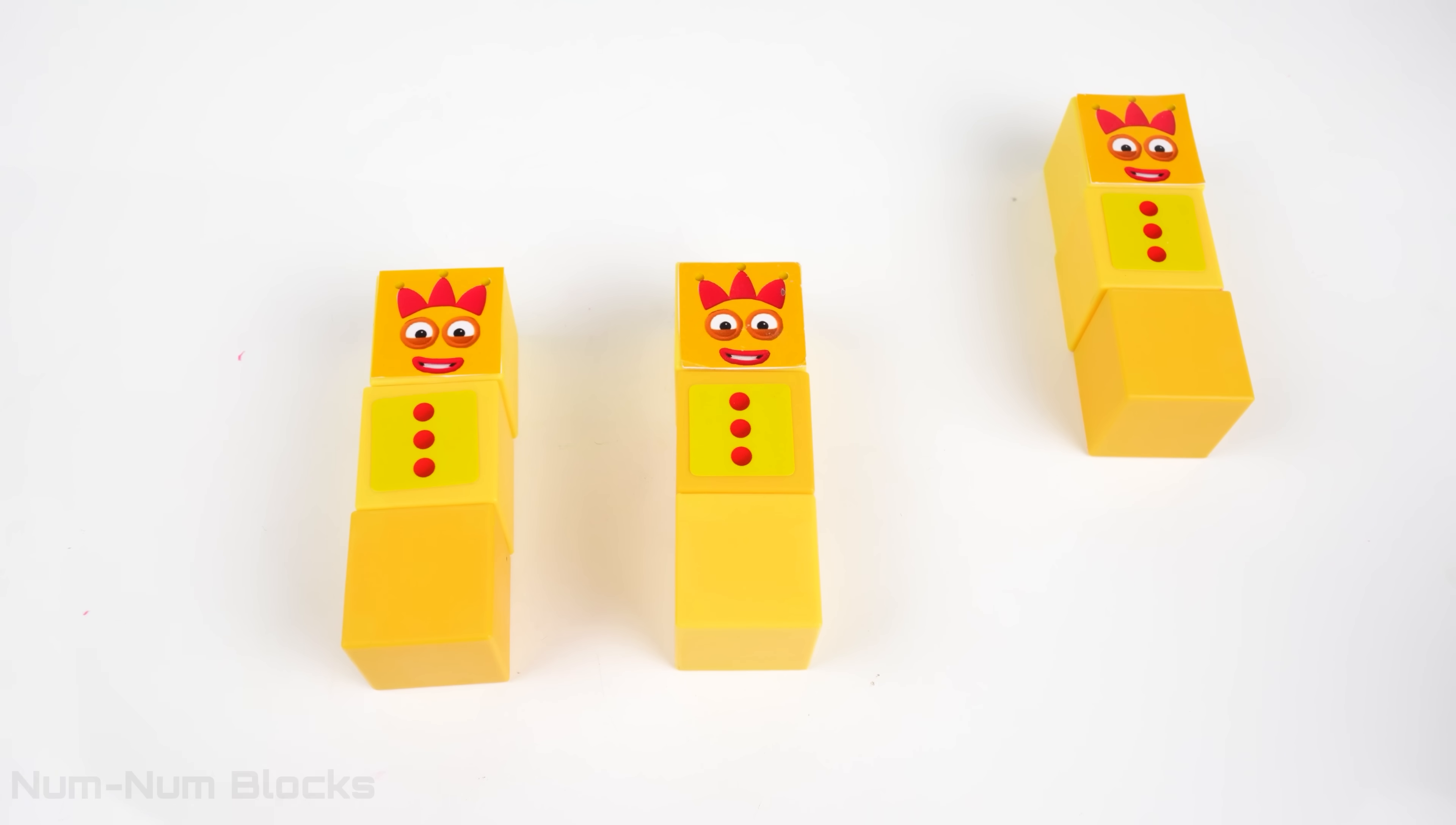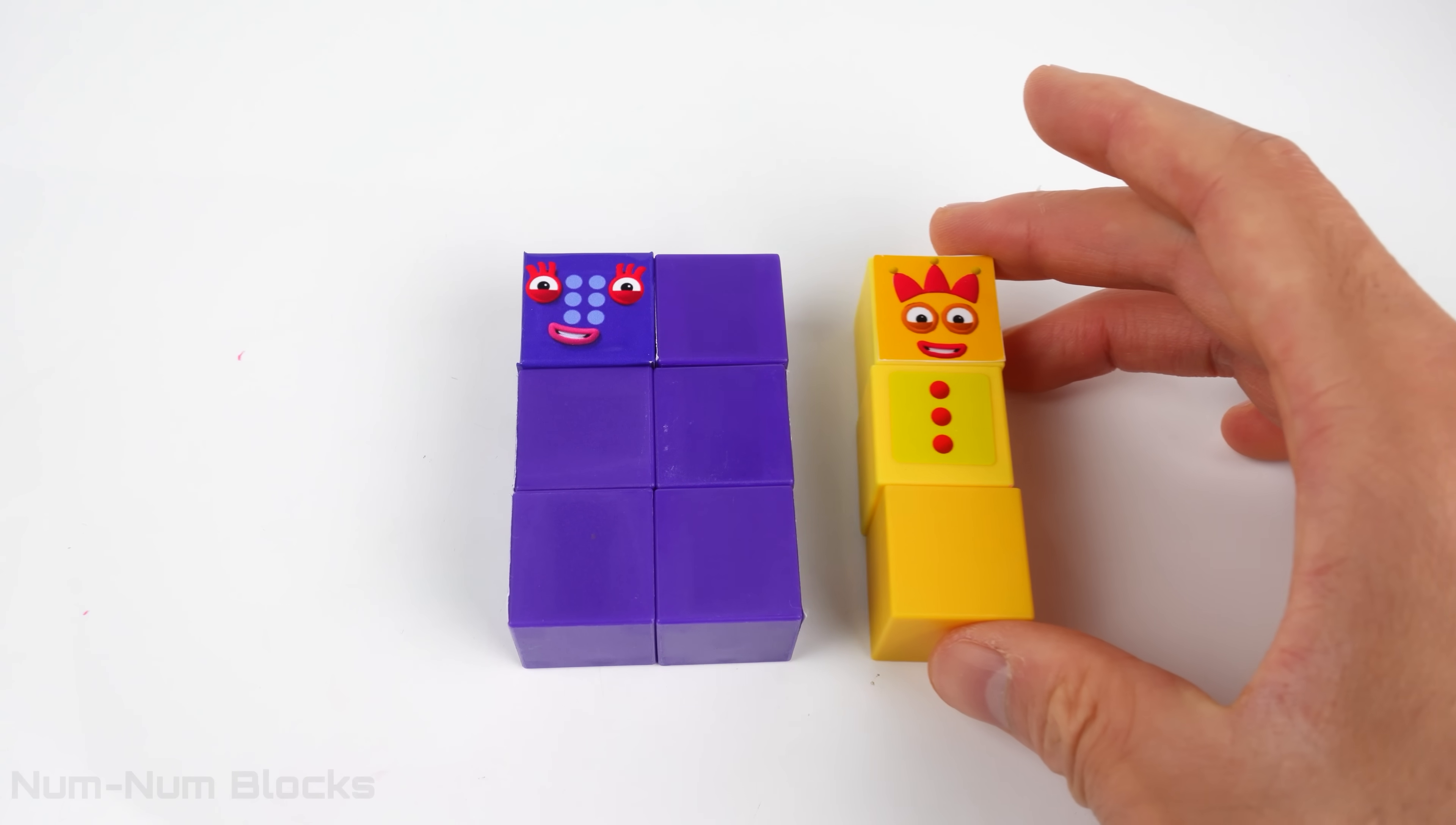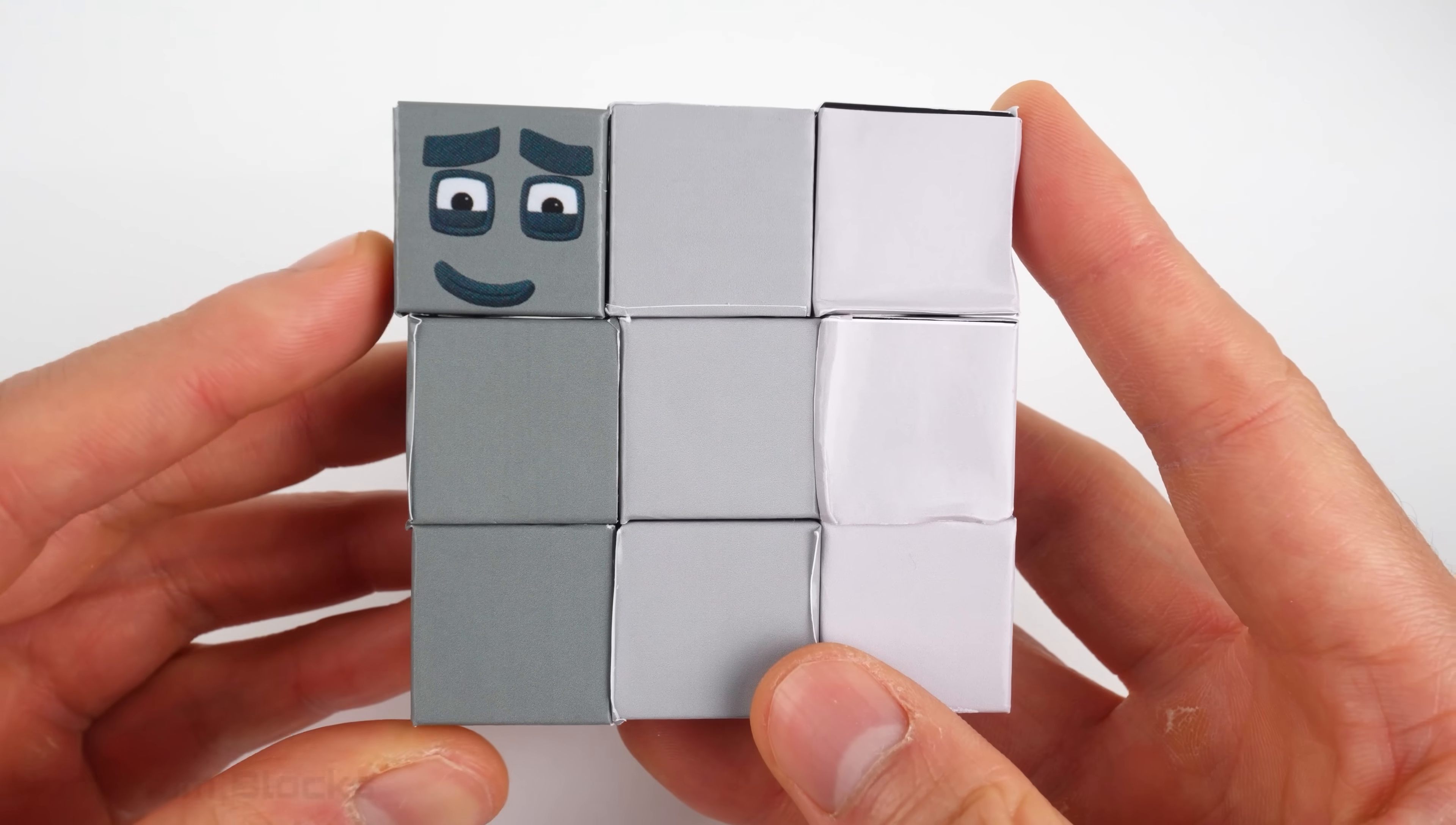Now let's do three plus three. Six! Now let's add three to six. We have nine! Three lots of three is nine! All right!